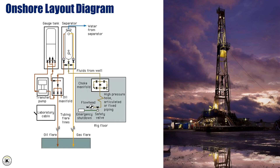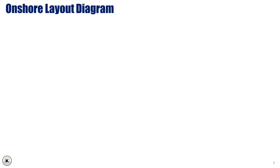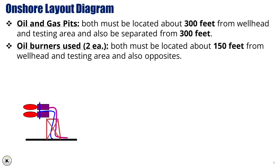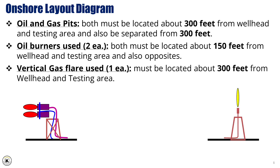Onshore or land layout diagram. In onshore rigs, the placement of various equipment around the wellhead and testing area is crucial for safety and operational efficiency. Both the oil and gas pits must be located approximately 300 feet away from the wellhead and testing area, with a 300-foot separation between the two pits to minimize risks. Both oil burners must be positioned about 150 feet from the wellhead and testing area, with the burners placed on opposite sides. The vertical gas flare should be located around 300 feet from the wellhead and testing area to ensure proper safety measures for gas combustion. These distance requirements are designed to enhance safety and reduce the risk of accidents.